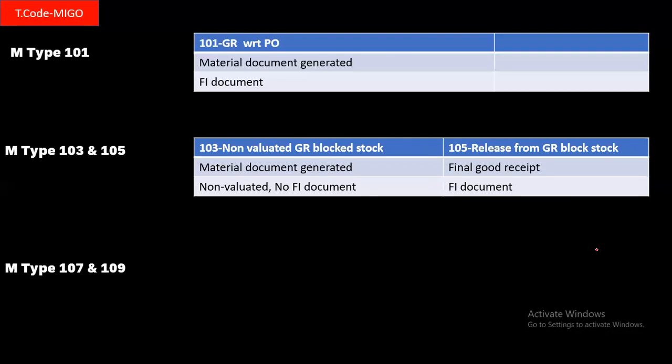Movement types 107 and 109 are an extension of 103 and 105. Some businesses have a requirement for origin acceptance of material, where a third party inspects the material at the vendor's place. When we do GR with movement type 107, the value will be increased but inventory will not be updated, because we have not yet physically received the material. Once we receive the material in the company's premises, we can do movement type 109.